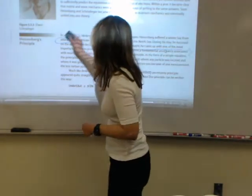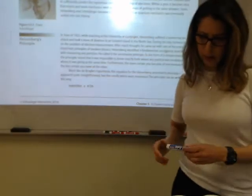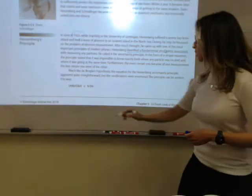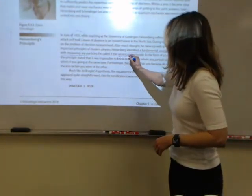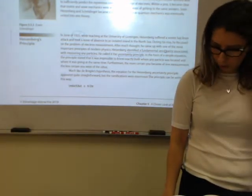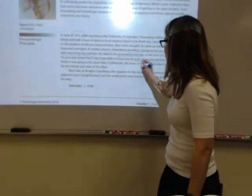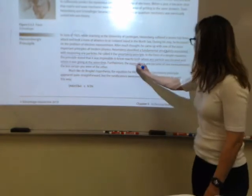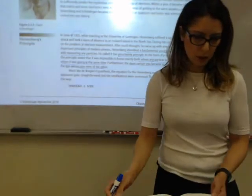So let's take a look at the Heisenberg uncertainty principle. In 1925, Heisenberg identified a fundamental uncertainty associated with measuring any particles. He called it the uncertainty principle. And it is impossible, the uncertainty principle said it is impossible to know exactly both where any particle is located and where it's going at the same time. And the more certain you become of one measurement, the less certain you become of the other.